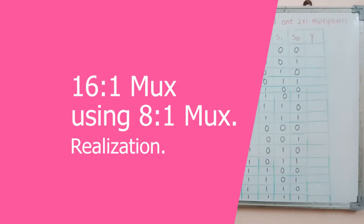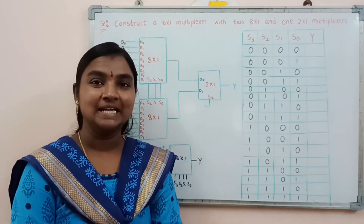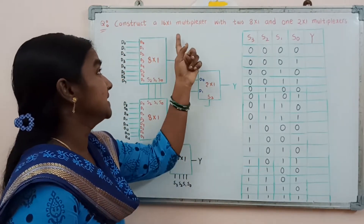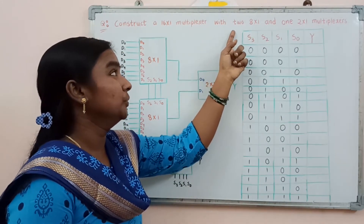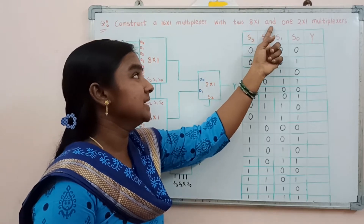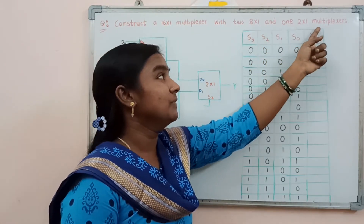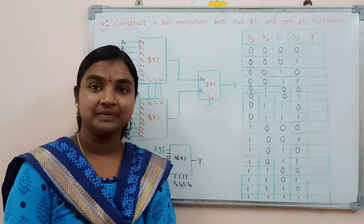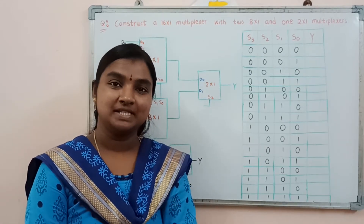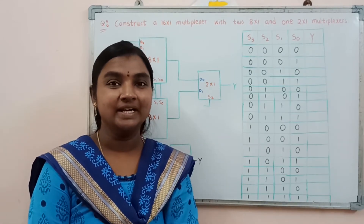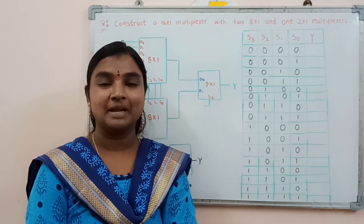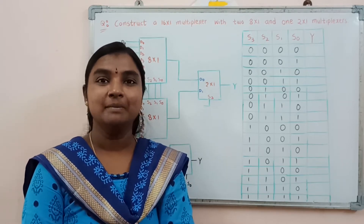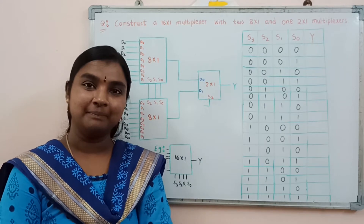In this video, I am going to explain the construction of a 16-to-1 multiplexer using two 8-to-1 multiplexers and one 2-to-1 multiplexer. In the last videos, I already explained about the 2-to-1 multiplexer, 8-to-1 multiplexer, and 4-to-1 multiplexer.